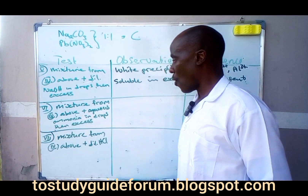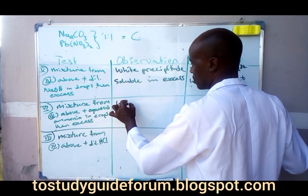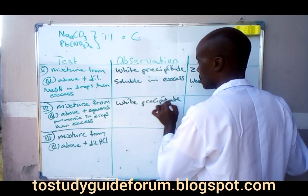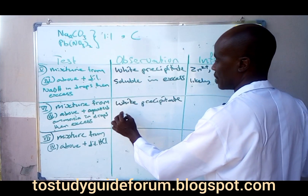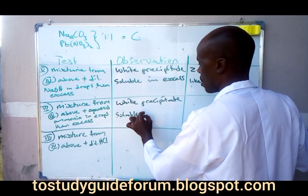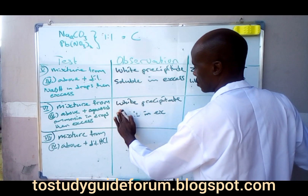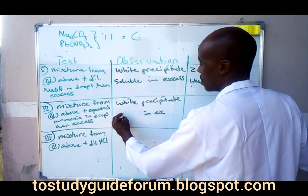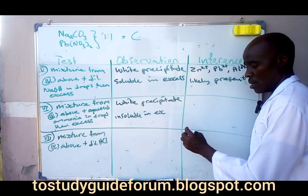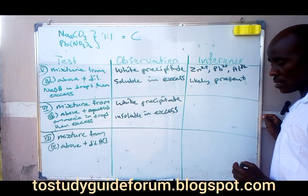From the same mixture, add aqueous ammonia. What we notice is a white precipitate forming in drops, which is insoluble in excess ammonia.